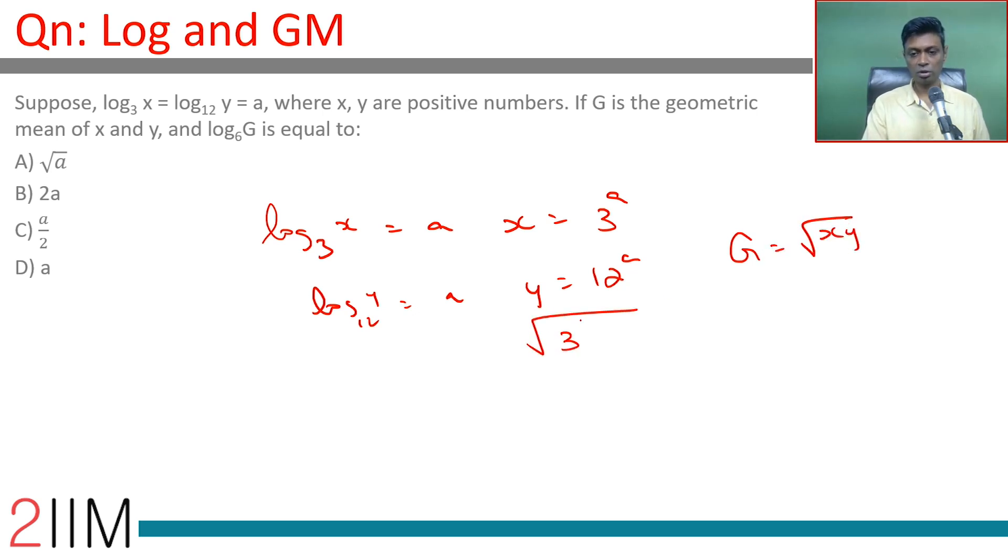Square root of 36 power a. This is square root of 6 power 2a, which is 6 power 2a whole power 1 by 2, which is 6 power a.